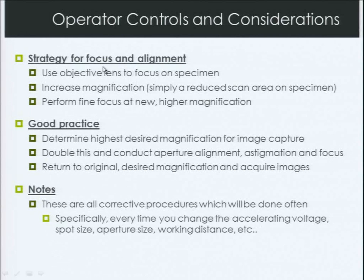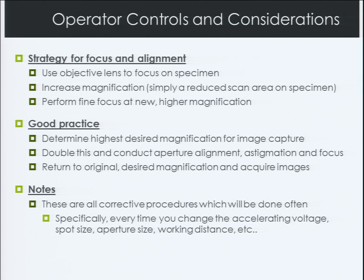For focus and alignment strategy: use the objective lens to focus on your specimen, then increase magnification, then perform a fine focus at that new higher magnification, and repeat. Determine the highest desired magnification, double it and do your aperture alignment, stigmatism, and focus at that doubled magnification, then zoom back out to your original desired magnification. This gives you the best, highest-resolution image. Every time you change accelerating voltage, spot size, aperture size, or working distance, you'll need to adjust your focus, aperture, and stigmatism from the beginning.